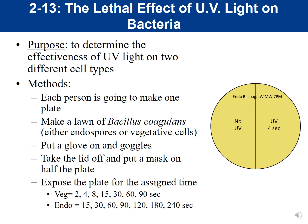Every person would be given one plate. On the agar side of the plate, you would draw a line down the middle and divide your plate into two halves. One side you're going to label 'no UV' — that side of the plate will be covered and protected from the UV light. The other side of the plate would be labeled 'UV,' and you would write down the exposure time you're given.